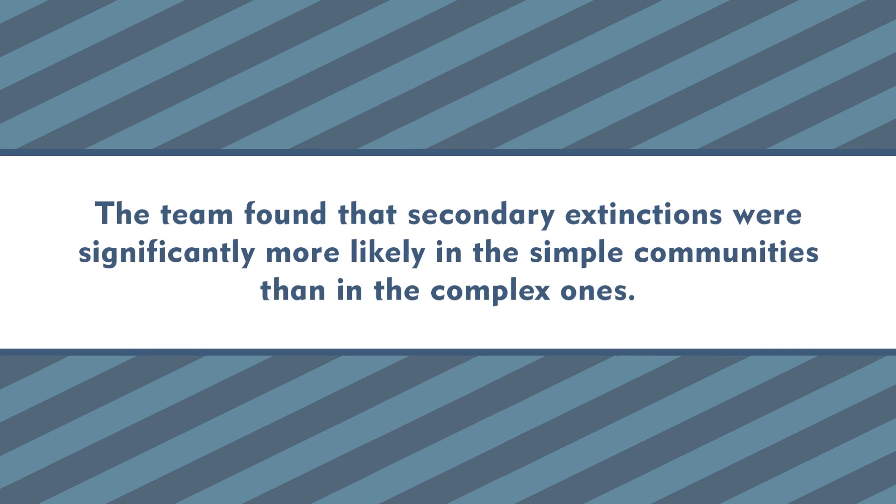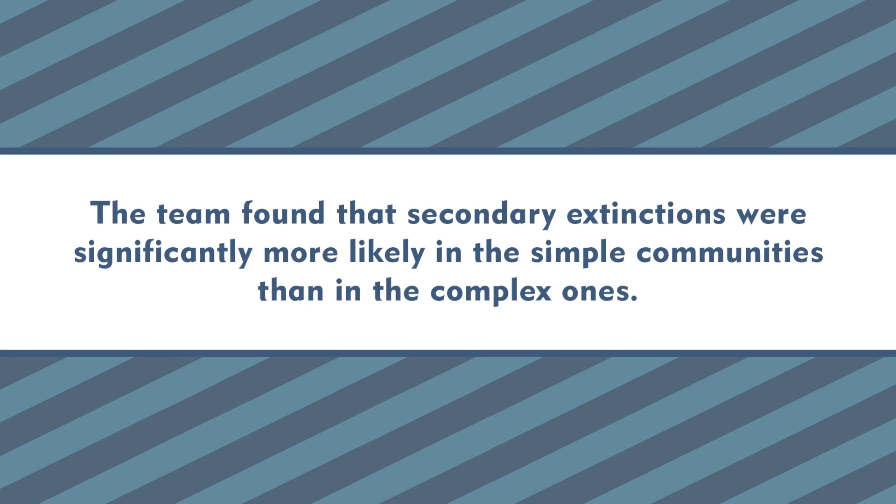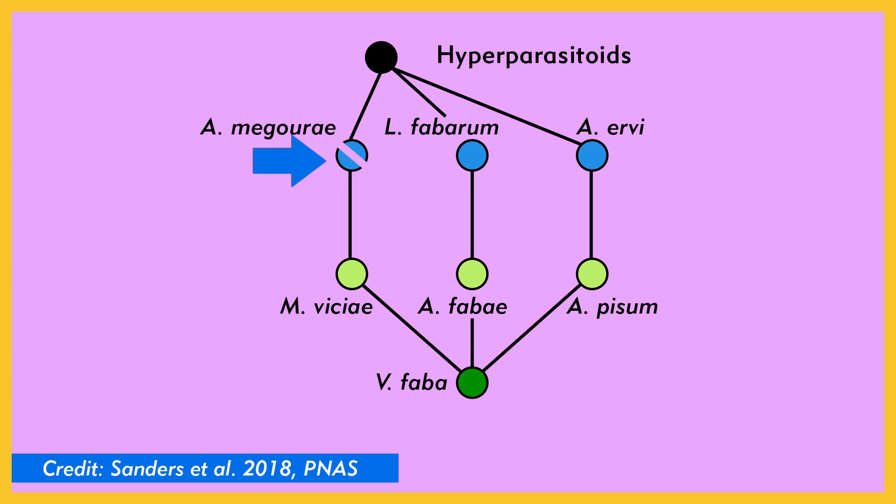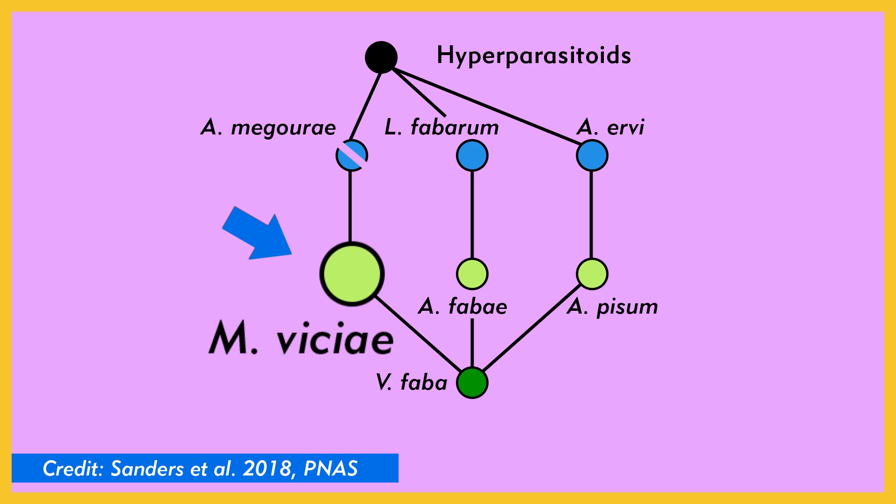So what'd they find? Were the redundant, more biodiverse communities more resilient to secondary extinctions? The team found that secondary extinctions were significantly more likely in the simple communities than in the complex ones. This is what they predicted, which is pretty cool. But to explain it, they needed to figure out how it happened. In all of the experiments, removing the species of wasps made the population of aphids that they eat get denser — makes perfect sense, it's way easier to reach a higher population density if you aren't being eaten.